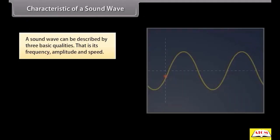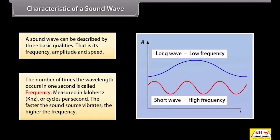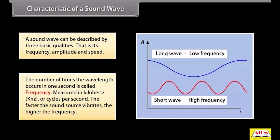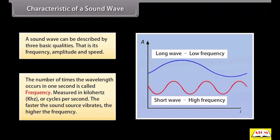Characteristics of a sound wave. A sound wave can be described by three basic qualities: that is its frequency, amplitude, and speed. The number of times the wavelength occurs in one second is called frequency. It is measured in kilohertz or cycles per second. The faster the sound source vibrates, the higher the frequency.